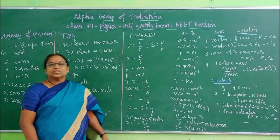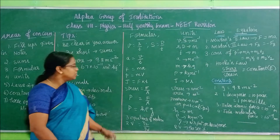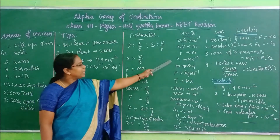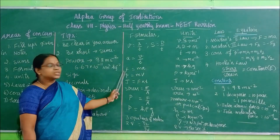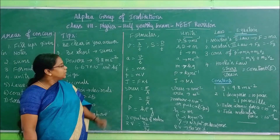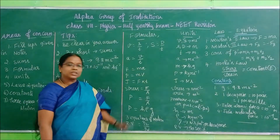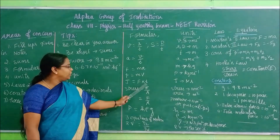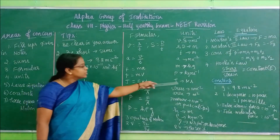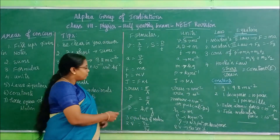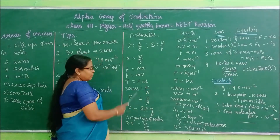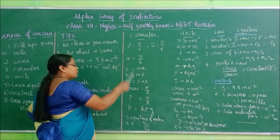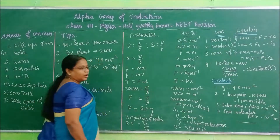F = ma - this is Newton's second law equation, where m is mass with unit kilogram. Acceleration unit we have already written. The unit for force is Newton. Then impulse we have: J = F × t. The unit for impulse is Newton second - from the formula itself we can directly write it: force unit is Newton, time unit is second. So if you know this formula, you can easily arrive at your units.